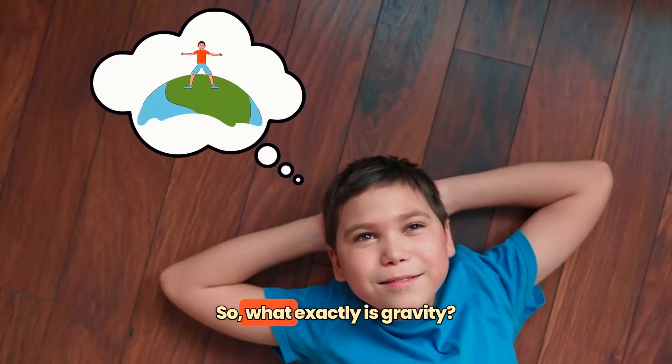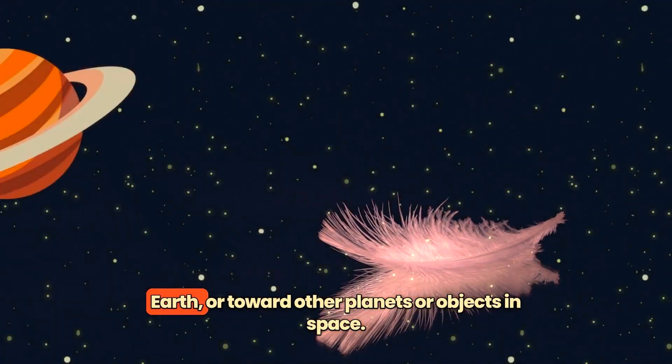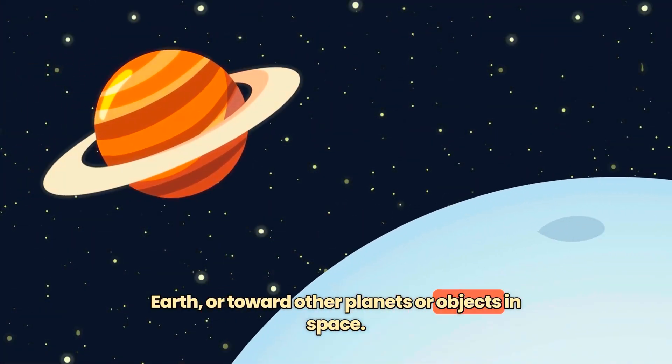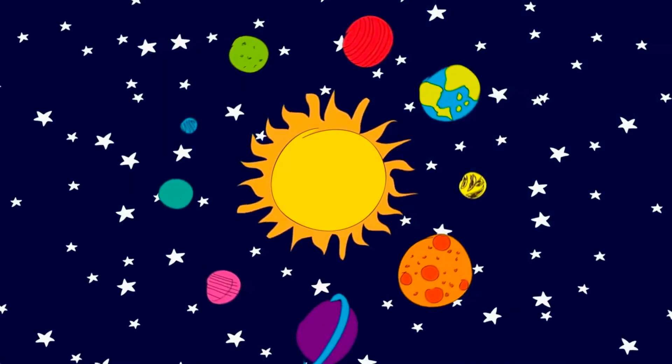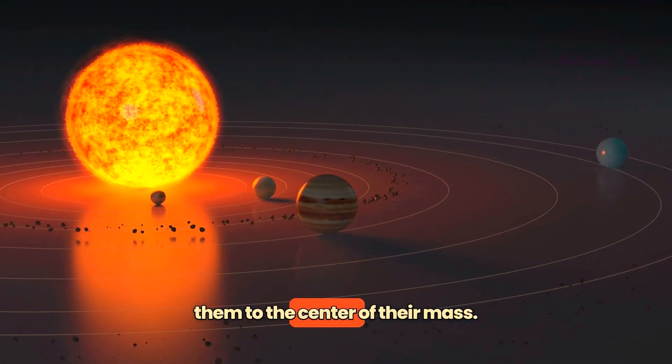So, what exactly is gravity? It's the force that makes everything fall toward the earth or toward other planets or objects in space. Gravity attracts all objects toward each other, pulling them to the center of their mass.